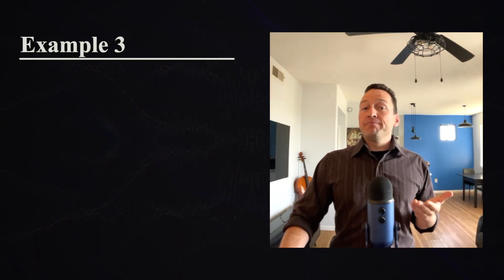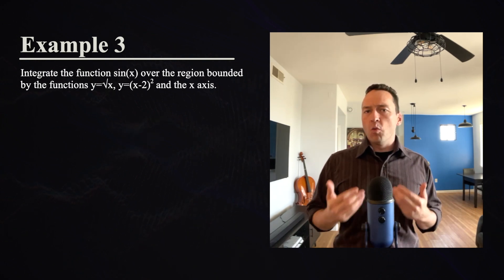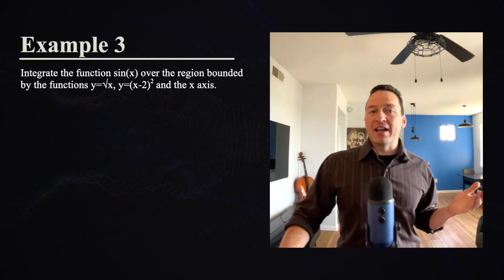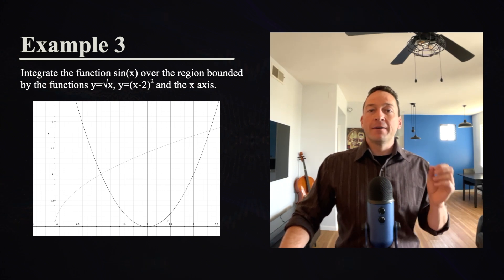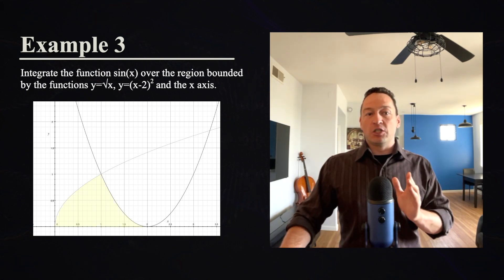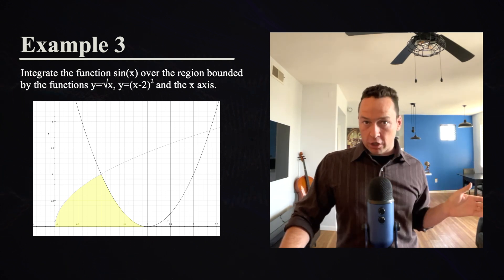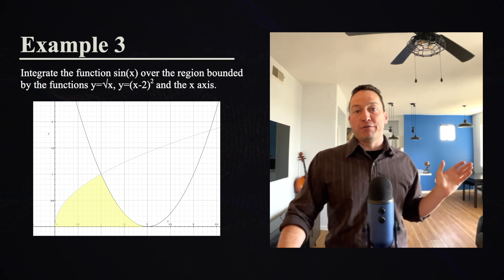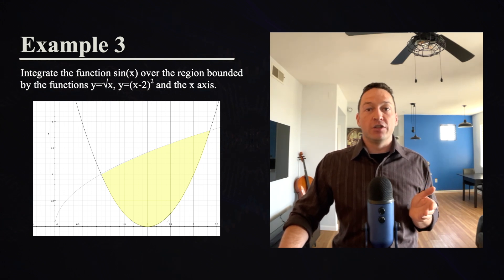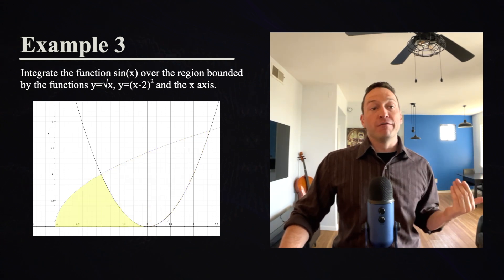As our final example, let's take the following problem: integrate the function sine of x over the region bounded by y equals square root of x, y equals square root of x minus 2, and the x-axis. Let's start by graphing these two curves — you have to graph this at least on paper in order to find the region. A quick tip: make sure you're picking the region that's bounded by all of the curves they're telling you about. In our case, it's three different curves. One region, for example, is only bounded by square root of x and square root of x minus 2, not by the x-axis — so make sure you pick the region bounded by all three curves.